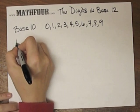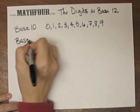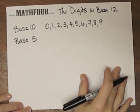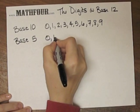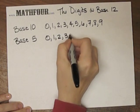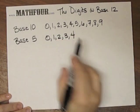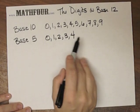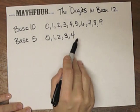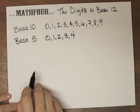In base 5 we use 0, 1, 2, 3, and 4. So we only have 4 digits. What comes after 4 is 1, 0, which means 1 set of 5 and 0 singles.